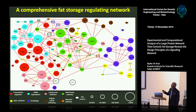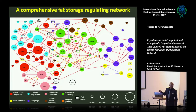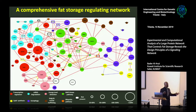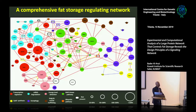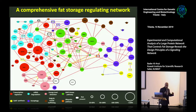Two things to take from this figure. First, the size of each node represents how fat the yeast becomes when you remove that gene — removing one protein makes the yeast much fatter than removing another. Second, the red lines indicate proteins that physically bind to one another, detected by co-precipitation using mass spectrometry — similar to a western blot. Those bindings are only detected if they are abundant and stable, so they represent very solid interactions.